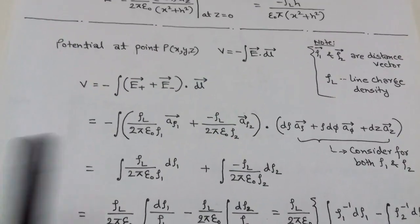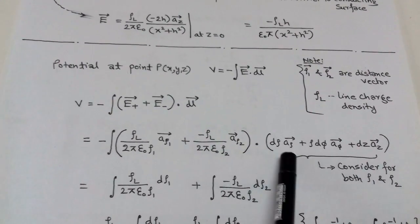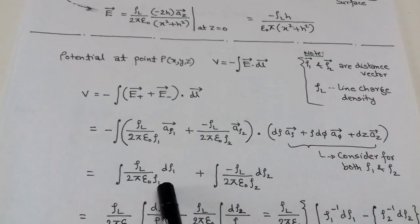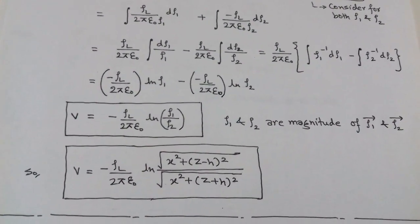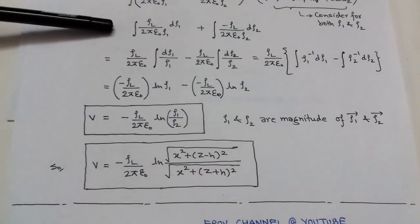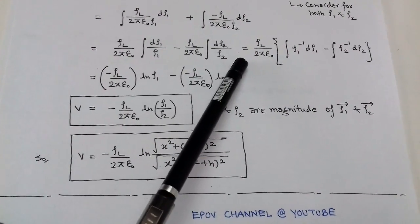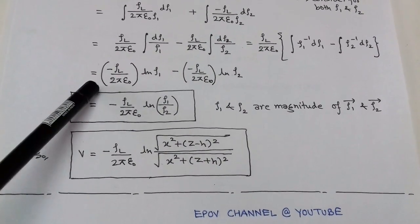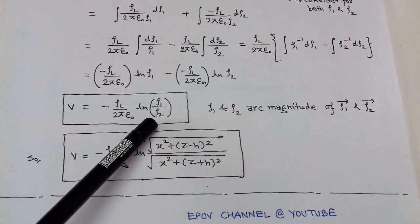Since the electric field has only the unit vector rho component, the dot product retains only the rho component; the phi and z components are cancelled. After the dot product, we get an integration with respect to rho only. Taking constant terms common and integrating with respect to rho_1 and rho_2 respectively, we get the potential V equals minus rho_l upon 2*pi*epsilon_0 times ln(rho_1 / rho_2).